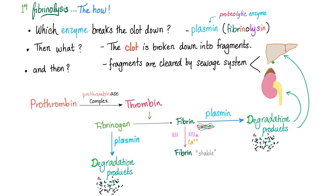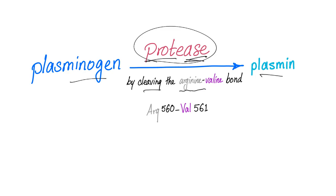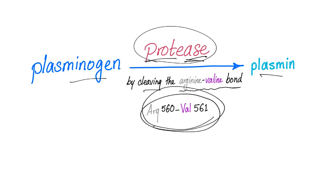Now we know the why, let's discuss the how. Which enzyme breaks down the clot? The great plasmin. The clot is broken down into degradation products — soluble fragments — cleared by your liver and kidney. Where does plasmin come from? From plasminogen. We need a protease because these are proteins — an enzyme that digests protein. The protease digests plasminogen into plasmin by cleaving the arginine-valine bond. What protease? The great tissue plasminogen activator, TPA.